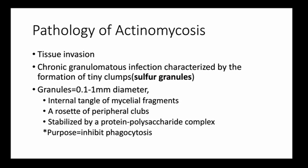The pathology of actinomycosis centers on tissue invasion. It is a chronic granulomatous infection characterized by the formation of tiny granules, about 0.1 to 1 mm in diameter, formed by internal tangling of mycelial fragments. There is also a rosette of peripheral clubs, stabilized by a protein-polysaccharide complex. The purpose of granule formation is to inhibit phagocytosis, as they become too large to be phagocytosed by phagocytic cells.